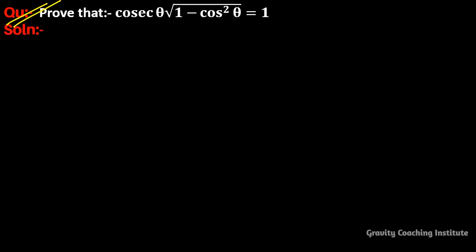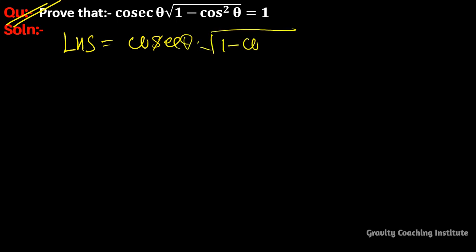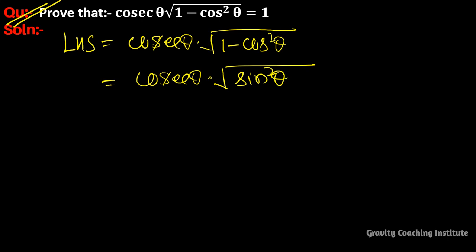Prove that cosec theta into root under one minus cos square theta equals one. We have LHS equal to cosec theta into root under one minus cos square theta. We know that the formula of one minus cos square theta is equal to sine square theta, so this becomes cosec theta into sine theta.